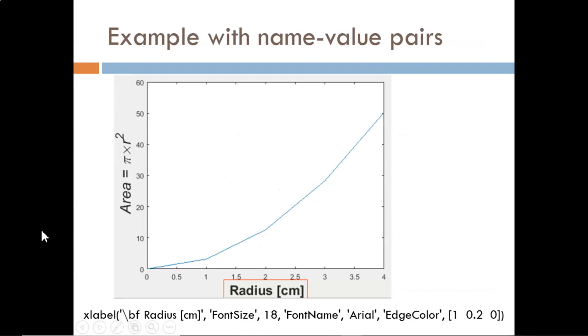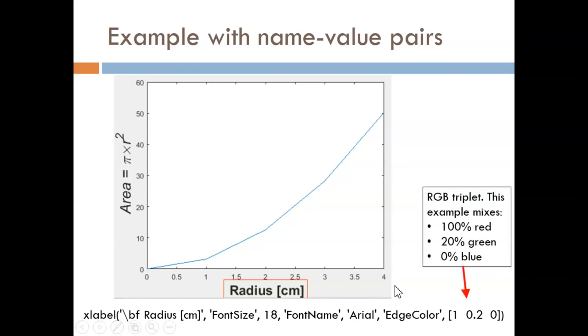Here's an example of some name value pairs used to modify the x label. The bold face shortcut still applies. Here, the font size is increased to 18. Here, the font name is changed to Arial. And here, a borderline for the text box is added with a specific color. This color is specified with an RGB triplet. The example shown mixes 100% red, 20% green, and 0% blue. So, it is mostly red with a slight tint of green.